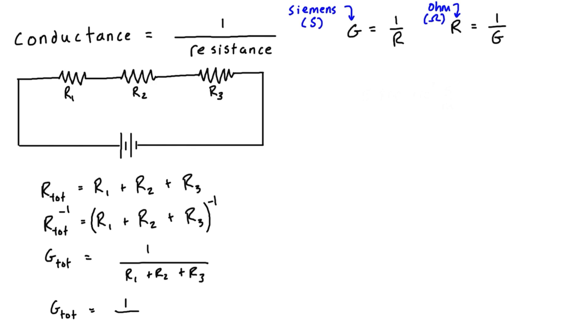So we can simplify this and we have that the total conductance G total is just equal to 1 over the total resistance, which was R total. So this is exactly what we have up here in our definition. We've just added the subscripts for the overall circuit.